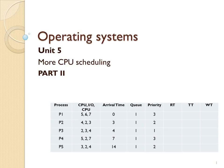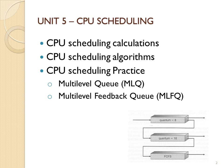Welcome to unit 5, more CPU scheduling. Today we're going to talk about multi-level queue and multi-level feedback queue. In your system you have different processes that have different scheduling algorithms — some using round-robin with time quantum 10, some with time quantum 20, and some first come first serve. With multi-level queue, a process stays in its assigned queue and always uses that queue's algorithm.